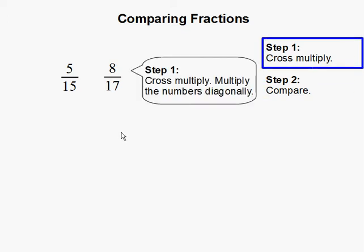Step 1. Cross multiply. And this means to multiply the numbers diagonally. We have 17 times 5 and 15 times 8.